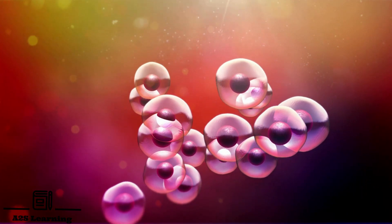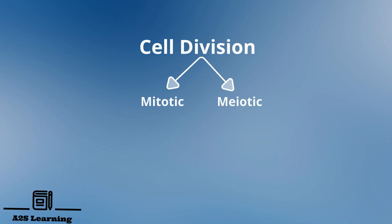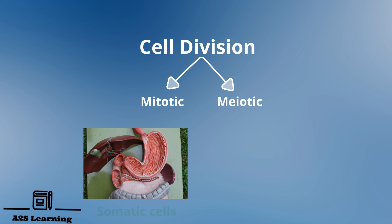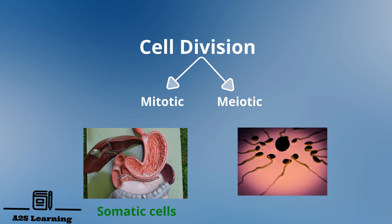There are two types of cell division: mitotic cell division and meiotic cell division. Mitotic cell division occurs in somatic cells. Somatic cell is any cell of the body except sperm and egg cells. Meiotic cell division occurs in gametes such as sperms and egg cells.